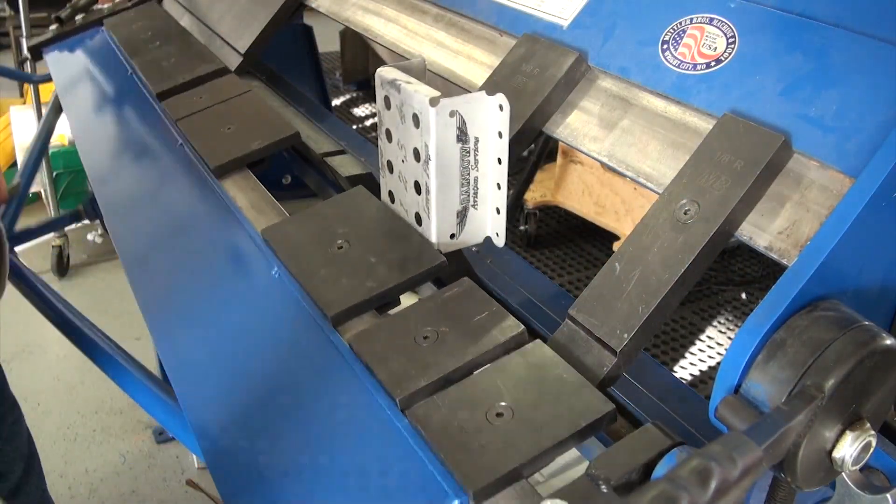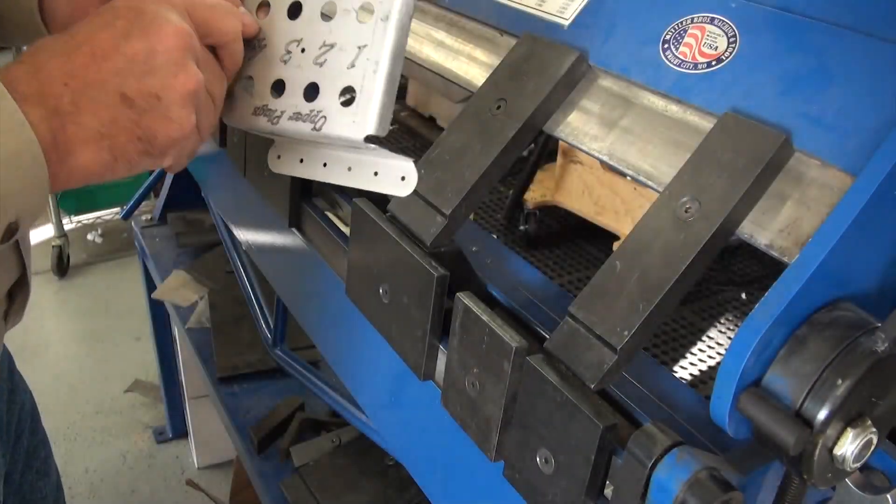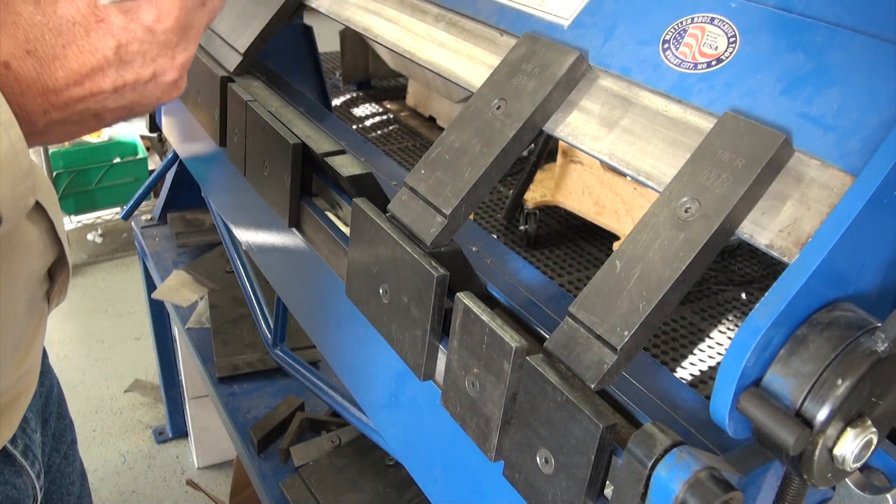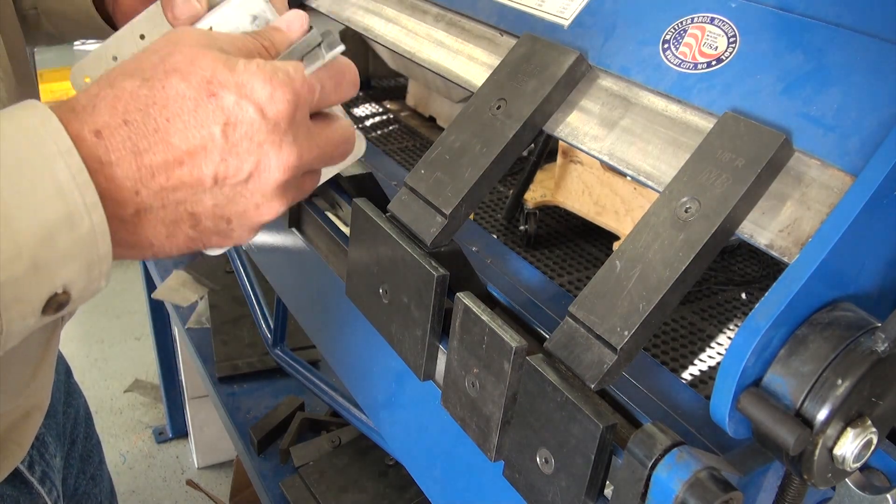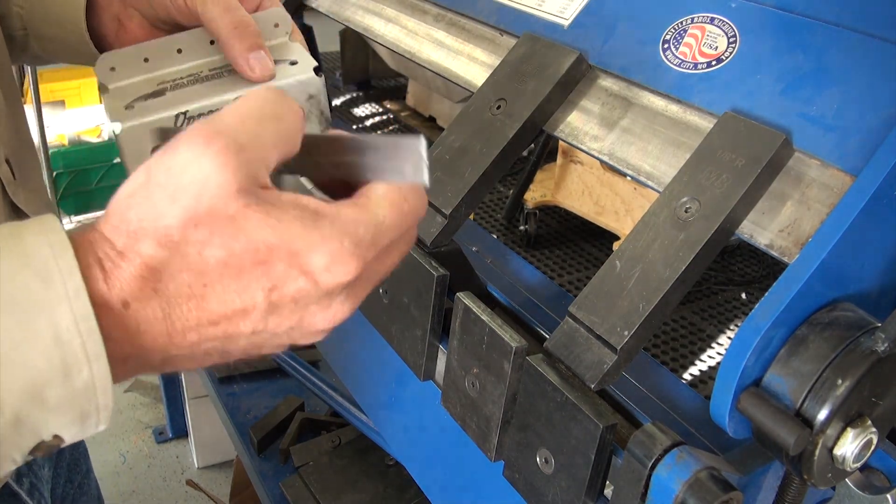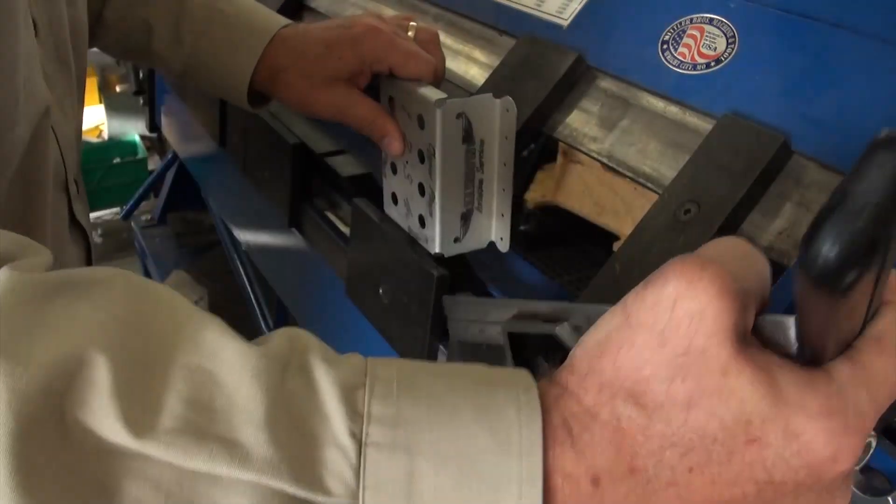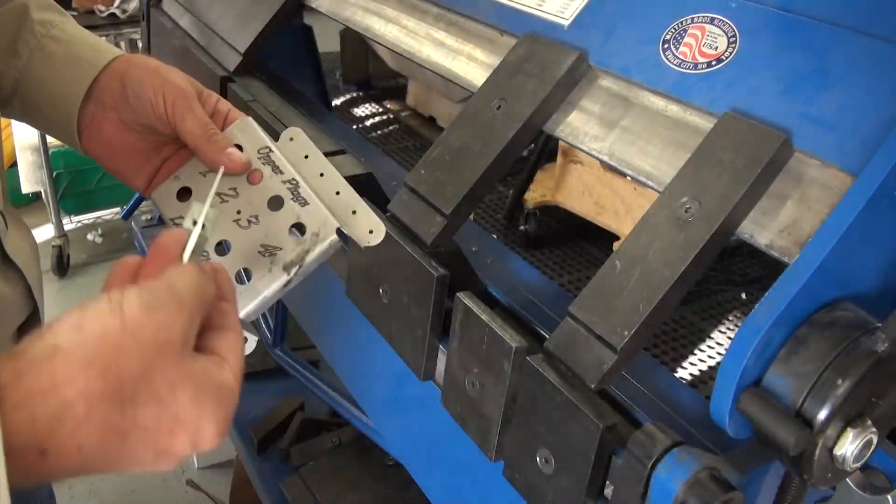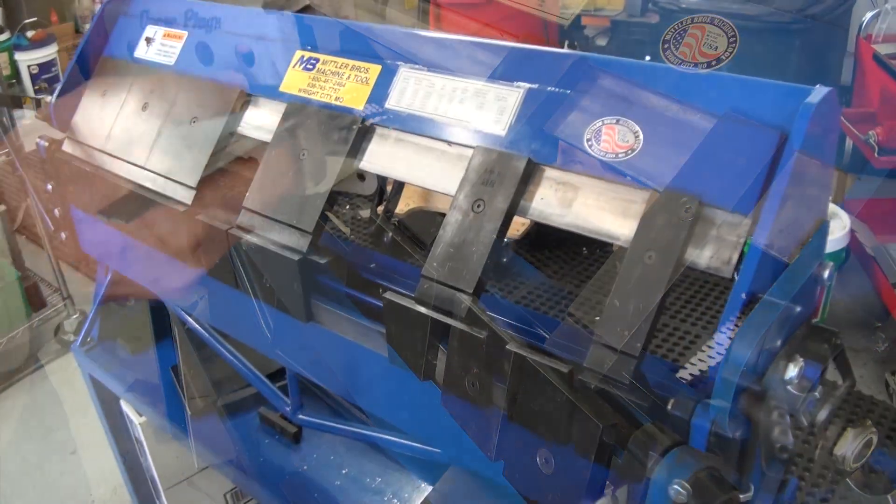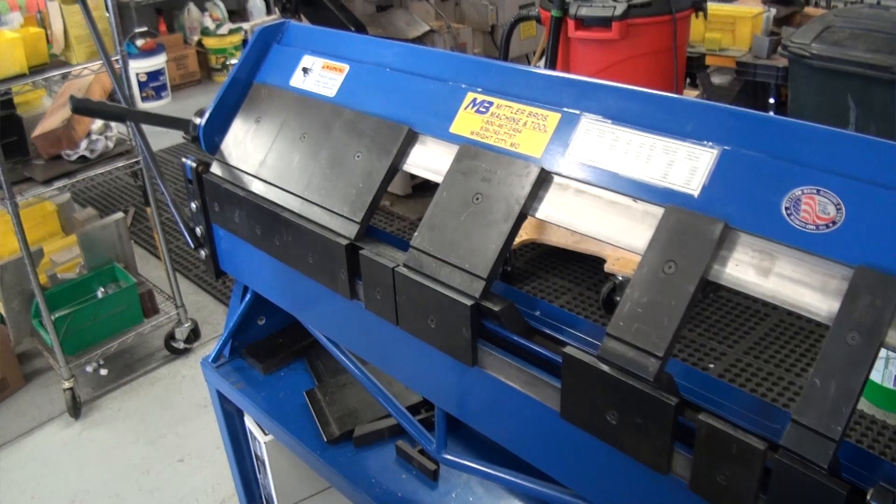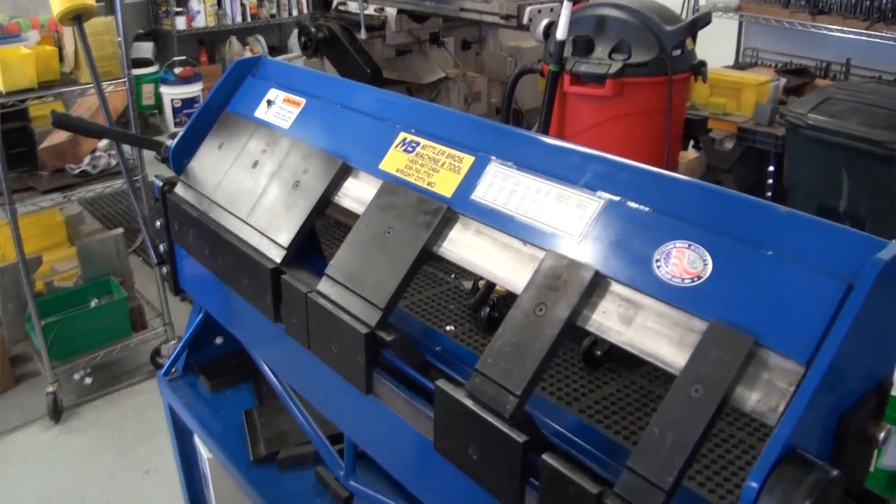And then the box and pan brake. The box and pan brake is sometimes referred to as a finger brake. This is because of the individual fingers which can be configured into nearly unlimited fashion to make some of the most complex sheet metal parts. If you're interested in purchasing a sheet metal brake for building experimental aircraft, this would most likely be your first choice.